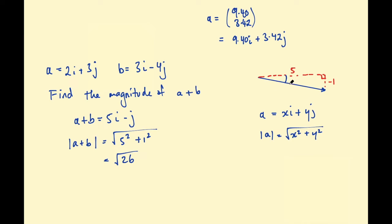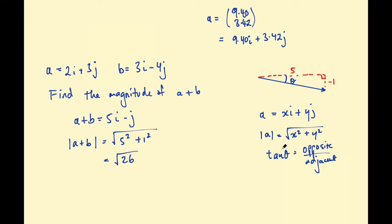To find the direction angle, we again use the trig ratios. Using the components 5 and 1, you could use tan θ = opposite / adjacent. Alternatively, once you know the magnitude (the hypotenuse), you could use sine or cosine as well.